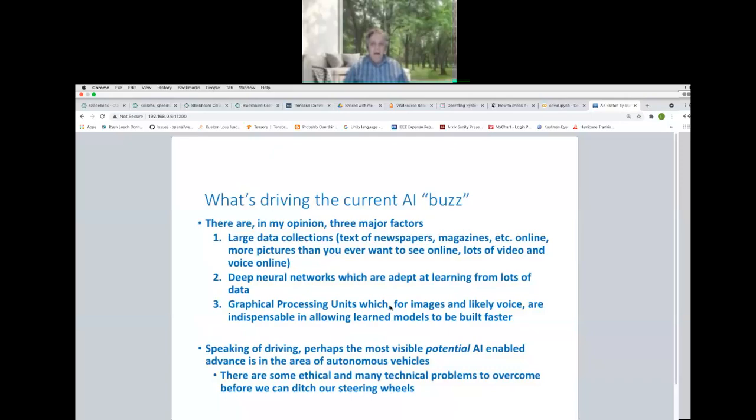All right. So what drives the current AI buzz? Why do people care about it? Why are so many people studying it? This is my opinion, and some people will disagree. It's okay. But I think there's three big factors. We have large data collections now. That comes from texts and newspapers, magazines, et cetera, that are online. You can grab all those digitally. More pictures than you'll ever want to see online. Lots of video online. Lots of voice online. We can capture all of that. We can especially capture pictures. So AI is really good with images because images of regular scenes. It's really good with images of regular scenes because there are lots of those online. You can just grab them. You don't have to have any permission. You can work with those.